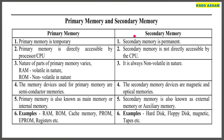Memory types: Primary memory includes RAM, ROM, Cache memory, EPROM, and PROM. Secondary memory includes hard disk, floppy disk, and magnetic tape.